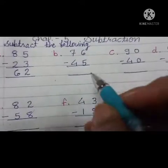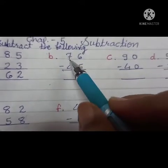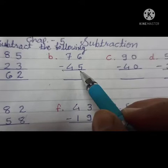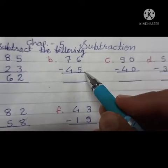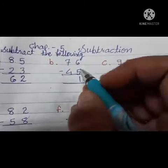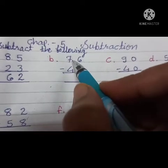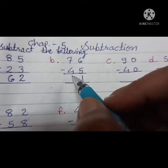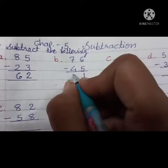Next, B: 76 minus 45. Very simple. Ones: 6 minus 5 equals 1. Then next number, tens: 7 minus 4 equals 3.